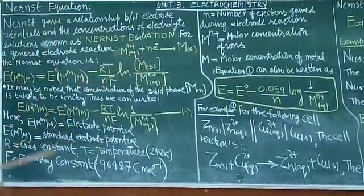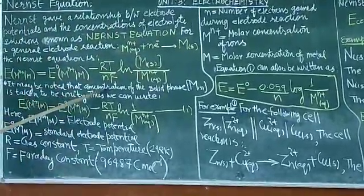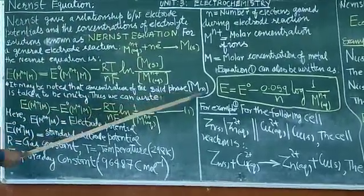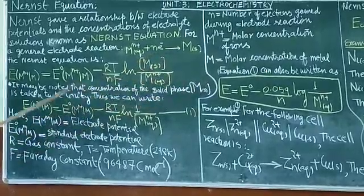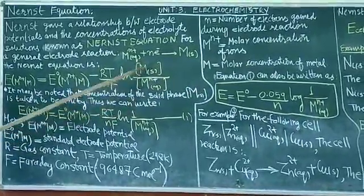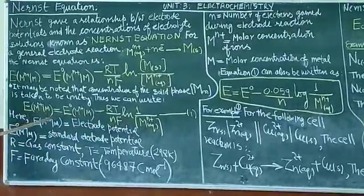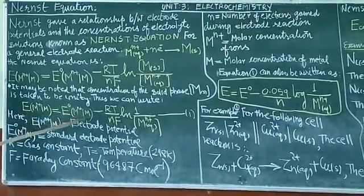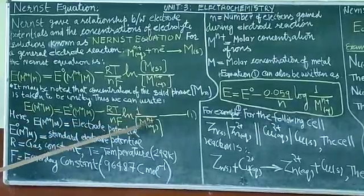What important thing we have to note here is that the concentration of the solid phase is taken as unity. And thus, we can write our equation as: E(M^n+/M) = E°(M^n+/M) - (RT/nF) ln(1/[M^n+]).